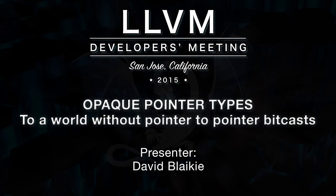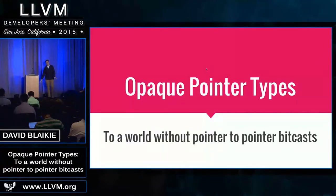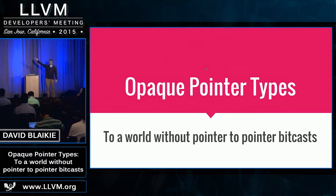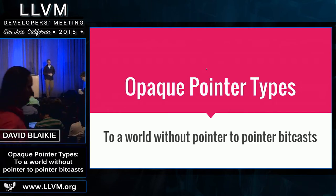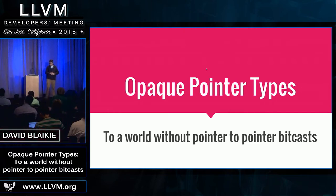Hi, I'm David Blakey. I work at Google. I've spent a couple of years working on debug info on LLVM, and the last six months wreaking havoc on everyone who hasn't out-of-tree anything. Opaque pointer types — if anyone's seen it in the commit lists, it usually accompanies a bunch of churn for pretty much everything. But we'll talk about why we're doing it, how we're doing it, and how it might look in the end.